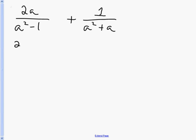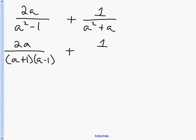So I'm going to rewrite this as 2a over a squared minus 1, which is the difference of two squares, and that's going to be (a+1)(a-1). Then my other fraction is 1 over a squared plus a, which I can write as a times (a+1).